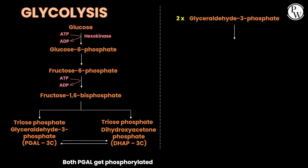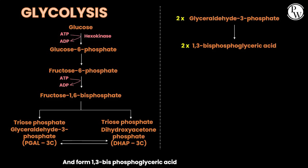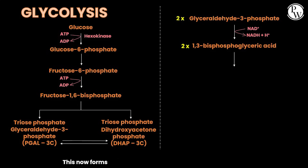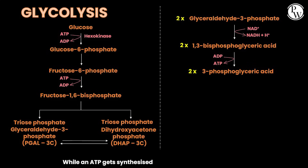Both PGAL molecules get phosphorylated, forming 1,3-bisphosphoglyceric acid, while NAD+ is reduced to NADH and H+. This then forms 3-phosphoglyceric acid, while an ATP gets synthesized.